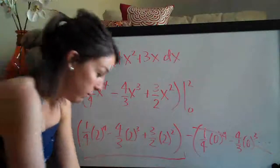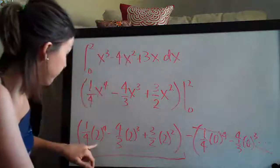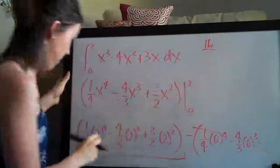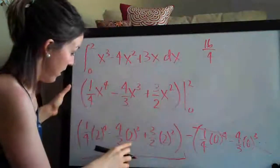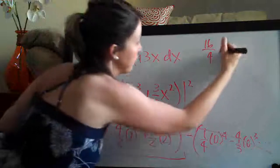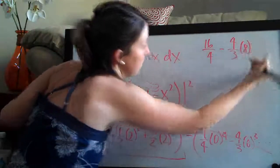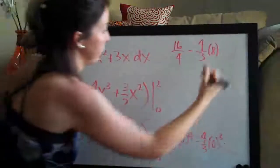But here to simplify, let's see, 2 to the fourth we have here. So that's going to be, 2 to the fourth is 16. So we have 16 and then we have divided by 4, and then 2 cubed is 8 so we have minus 4 thirds times 8, and then 3 halves and then 2 squared is 4. So we have plus 3 halves times 4.